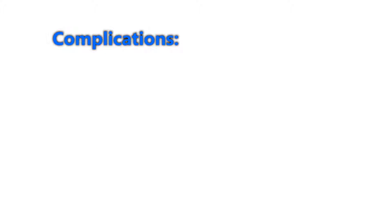Complications and contraindications to using thiazide-type diuretics: any medication used for hypertension can cause hypotension, as some people may respond more than expected — which is why we start with lower doses. Another complication is gout, since thiazide diuretics reduce the clearance of uric acid.